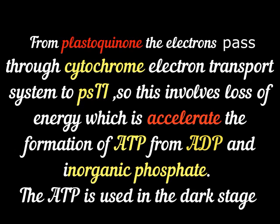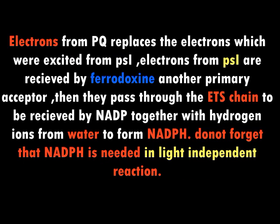As electrons are being excited at Photosystem 2 at 680 nanometers, electrons are also being excited from Photosystem 1 at 700 nanometers, raising to a higher energy level. The electrons excited from Photosystem 1 are replaced by those electrons coming from plastoquinone — note that those electrons from plastoquinone are not being excited upwards to ferredoxin, but are replacing those excited from Photosystem 1. The excited electrons of Photosystem 1 are received by ferredoxin as another primary electron acceptor.